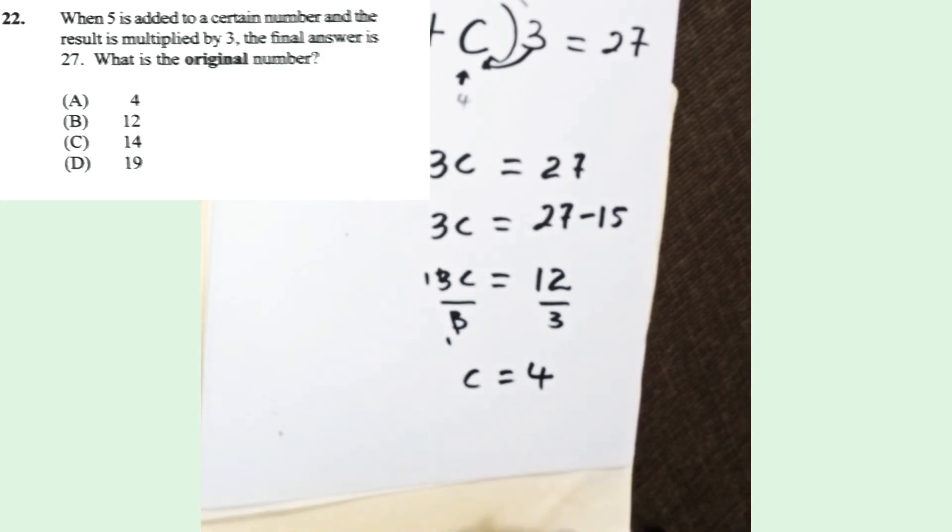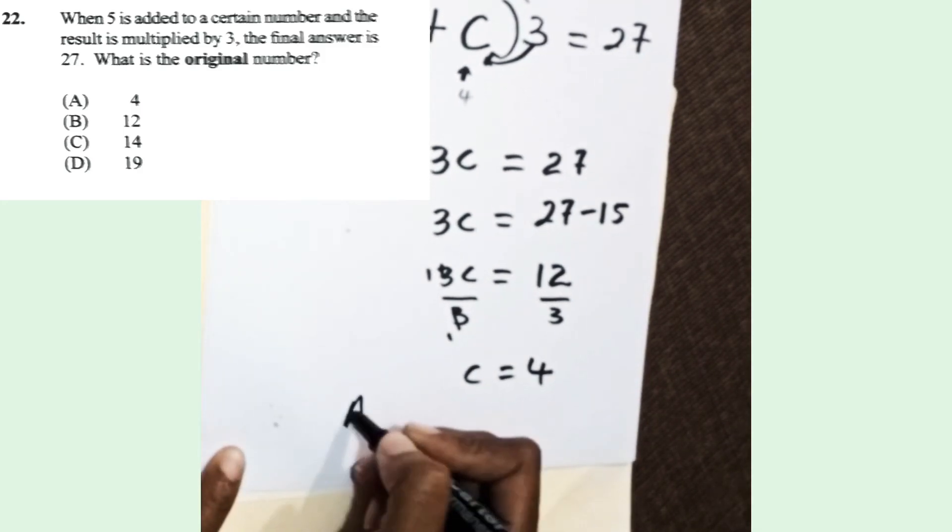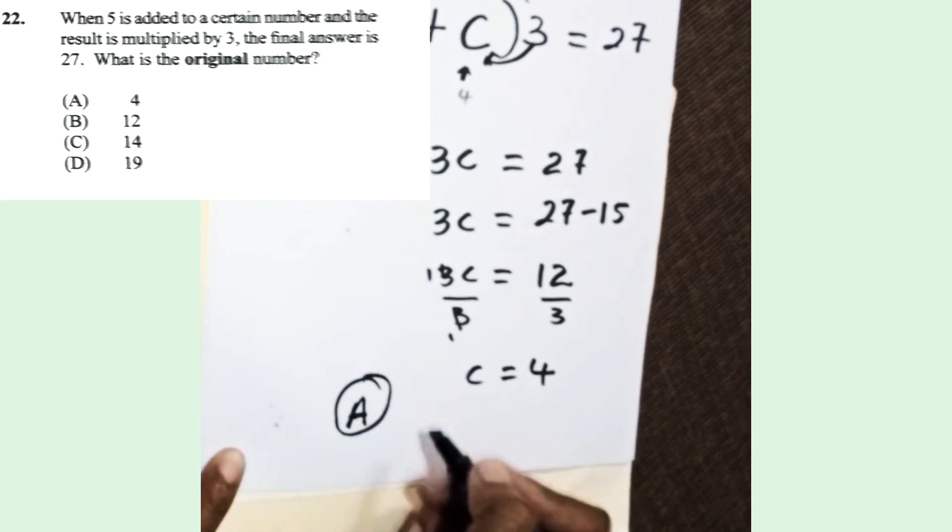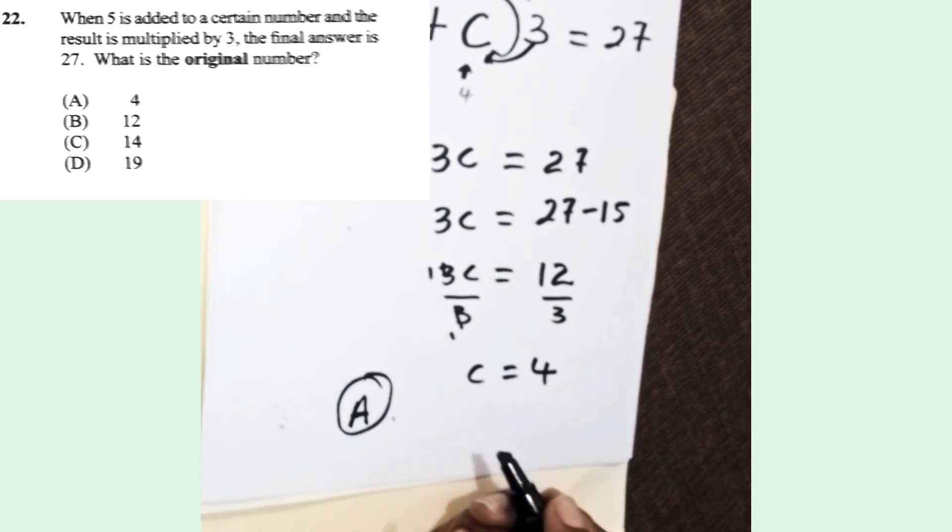You divide both sides by 3, so C equals 4. Of course, your answer is A.